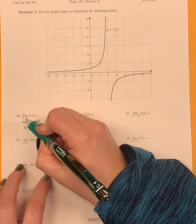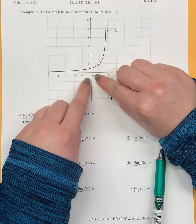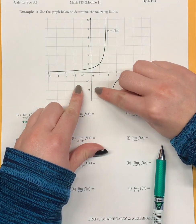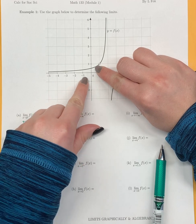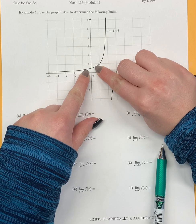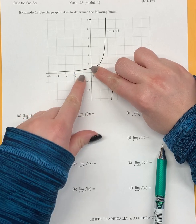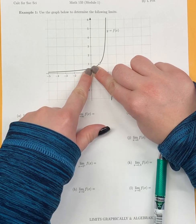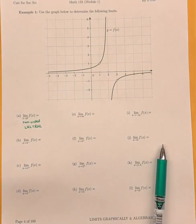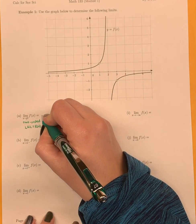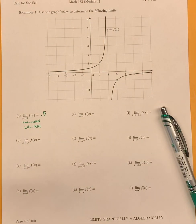So we want to approach the x value zero from both the left and the right on the graph. These are all functions, which means we can only hop on at one place. The one place to the right of zero is over here, and to the left of zero is over here. We're going to follow both and approach x equals zero to figure out what our y value is. From both the right and the left side, our fingers touch — the y value looks like it's about 0.5, or one half. It's somewhere between zero and one.